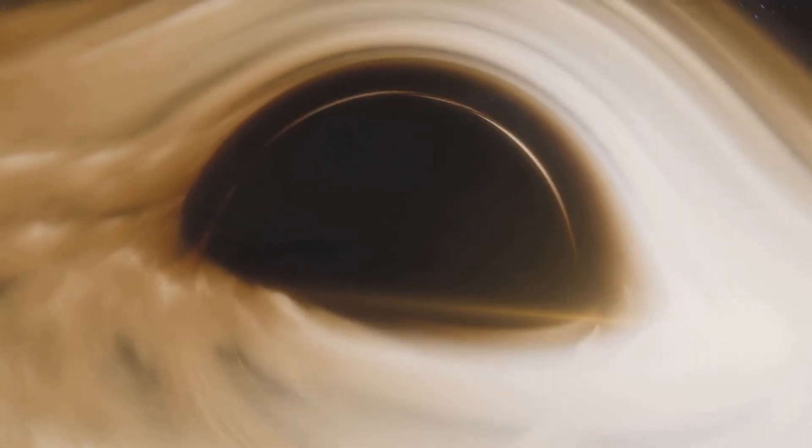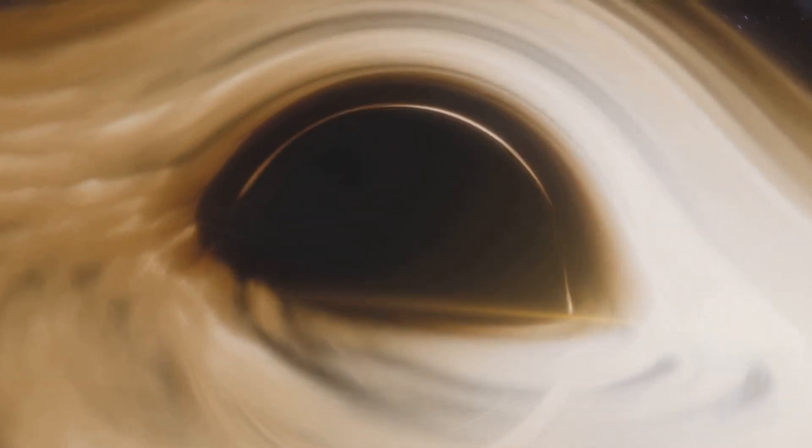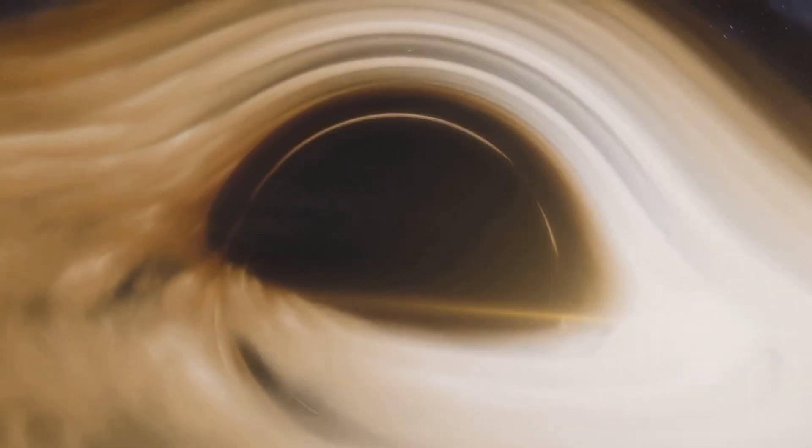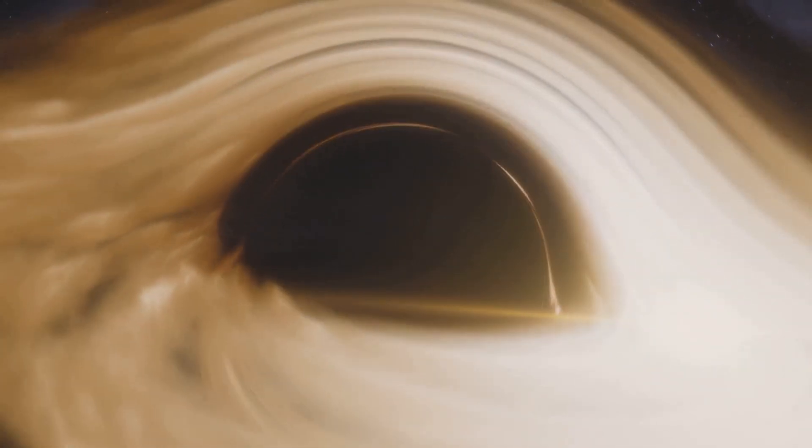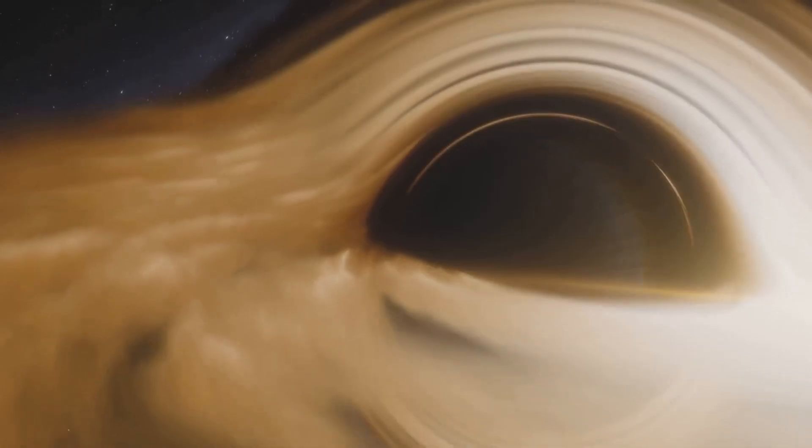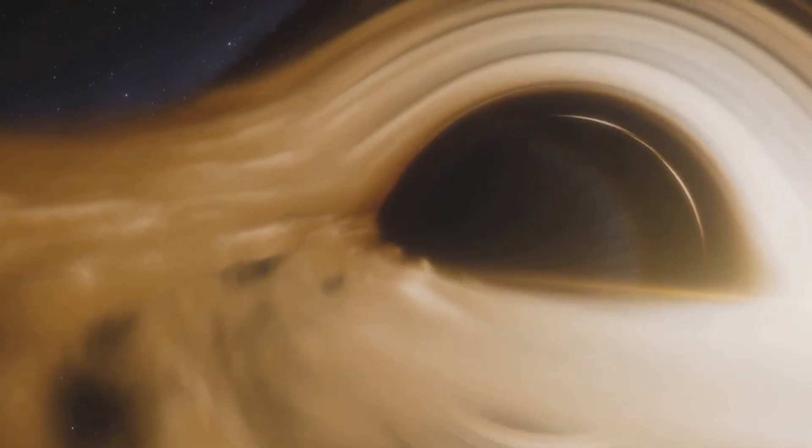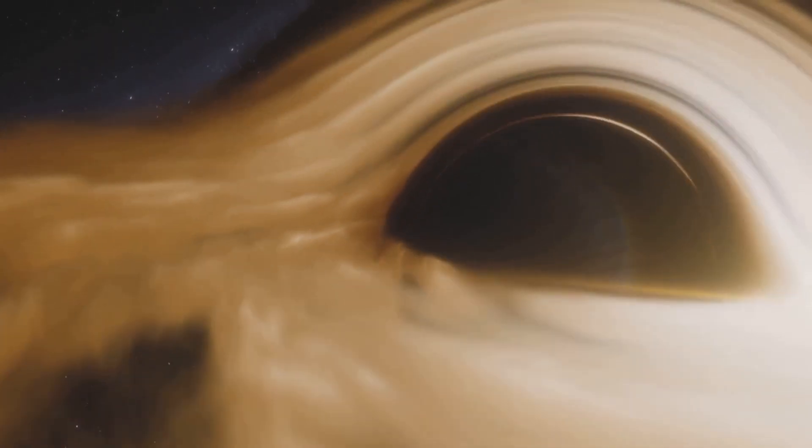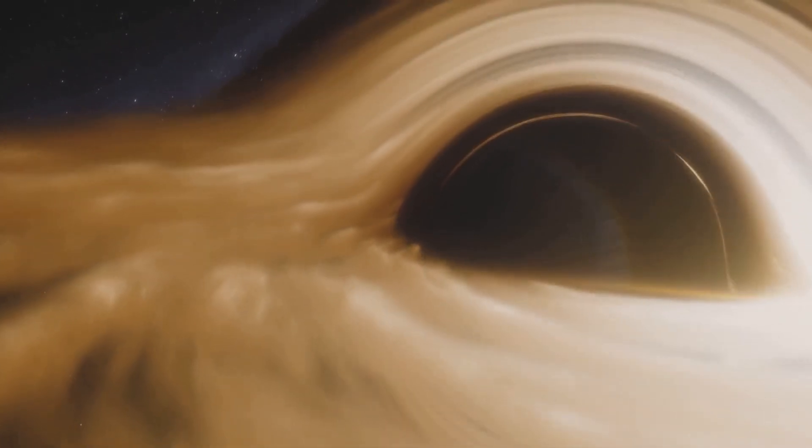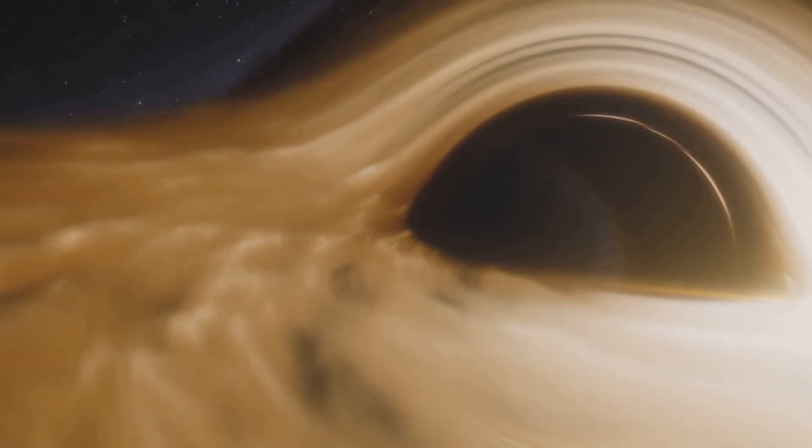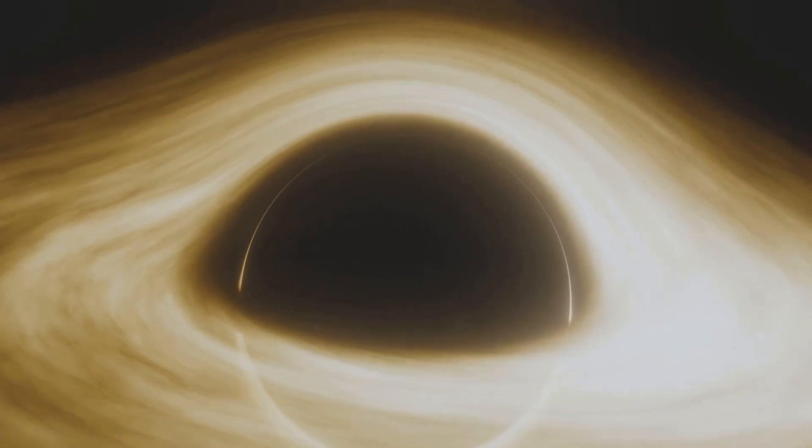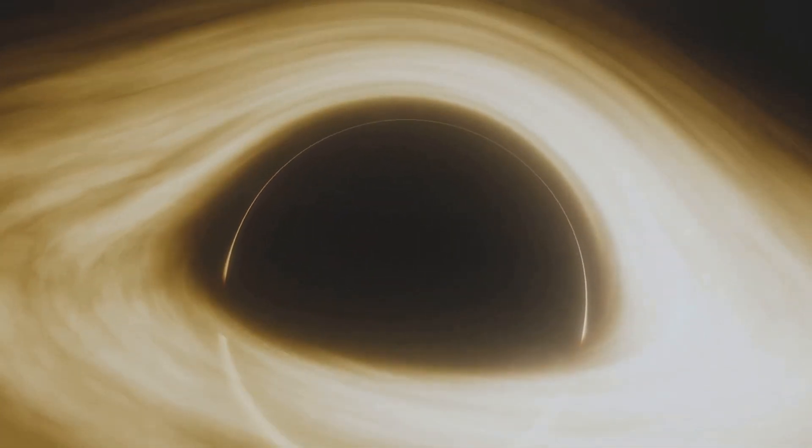Surrounding this singularity is the event horizon, an invisible boundary marking the point of no return. Any unsuspecting object that crosses this horizon will be stretched and distorted in a spaghettification process before it's finally consumed by the singularity. Black holes are essentially space-time whirlpools, where the laws of physics as we know them cease to exist.